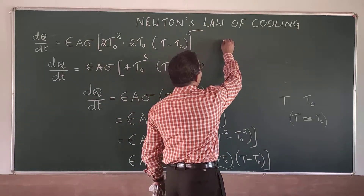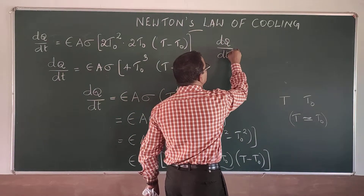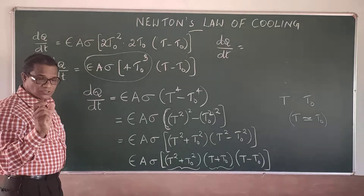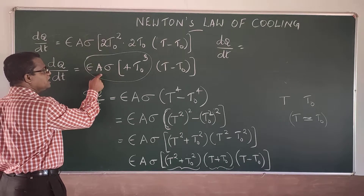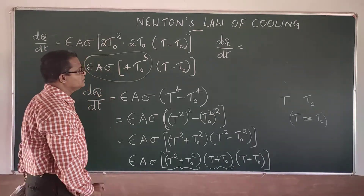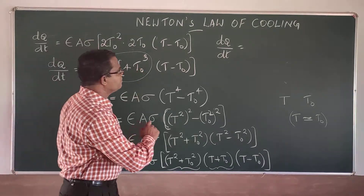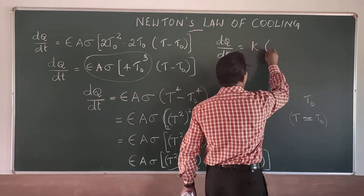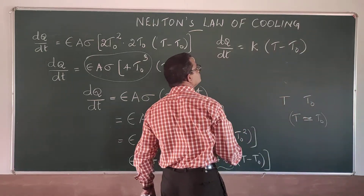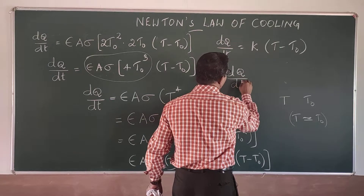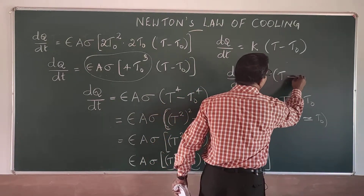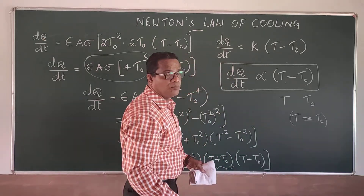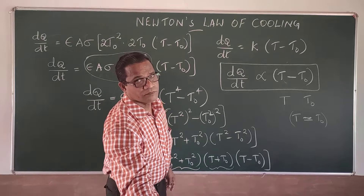Now, dQ by dT can be written as a constant K into (T - T₀), since ε, A, σ, and T₀ are all constants. So finally we get dQ by dT is directly proportional to (T - T₀), that is, the difference in temperature between the body and its surroundings.